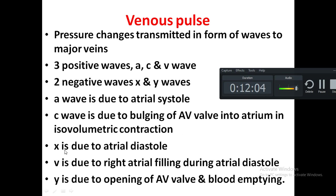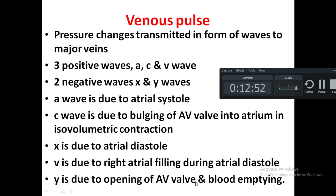The X wave is a negative downward wave caused by atrial diastole — when the atria starts relaxing, pressure decreases, shown as the X descent. The V wave is due to right atrial filling during atrial diastole; towards the end of diastole, blood continuously coming into the right atrium from the peripheral veins causes a gradual increase in right atrial pressure. The Y wave is a negative downward wave caused by opening of the AV valve and emptying of blood from the right atrium into the right ventricle.